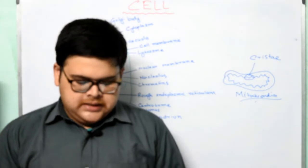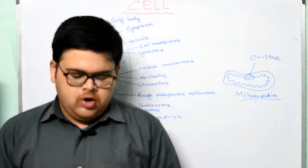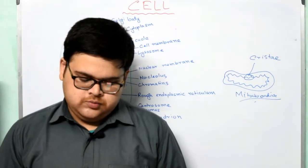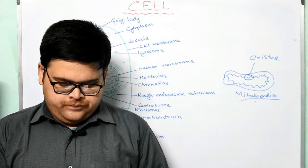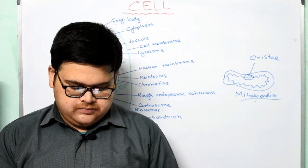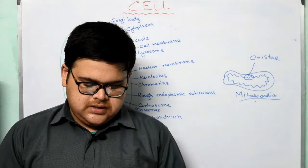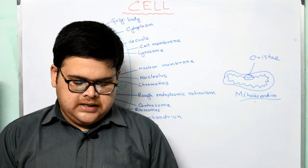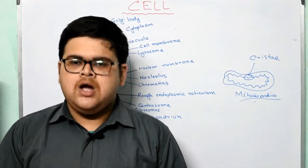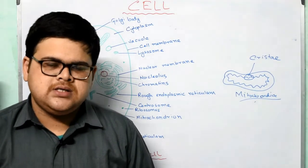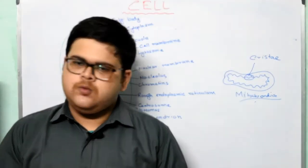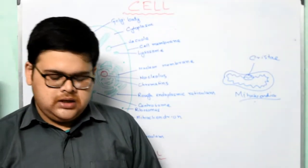Golgi bodies are stacked flattened membrane-bound vesicles. Golgi bodies are involved in packaging of substances such as enzymes and hormones. They also help in the formation of lysosomes. Lysosomes are membrane-bound sacs that contain digestive enzymes. These enzymes help to digest old, worn-out cells as well as organelles, and even destroy foreign bodies such as bacteria. They are often called suicide bags of the cell. Whatever needs to be digested — be it waste material or nutrients — is digested in the lysosomes.